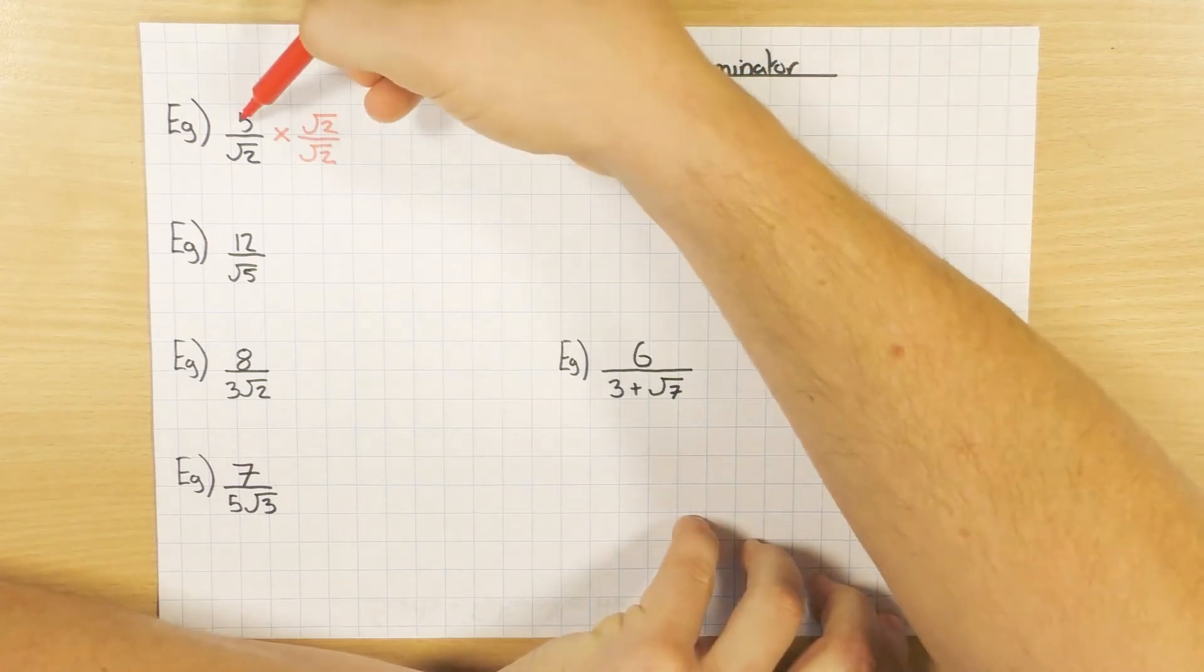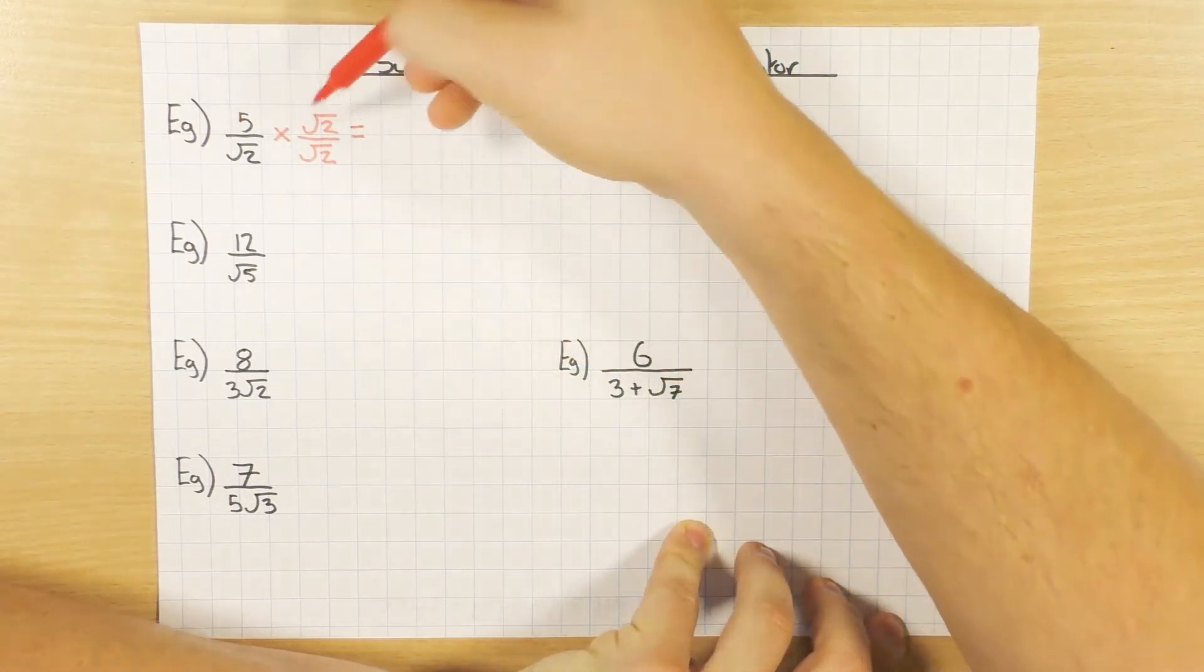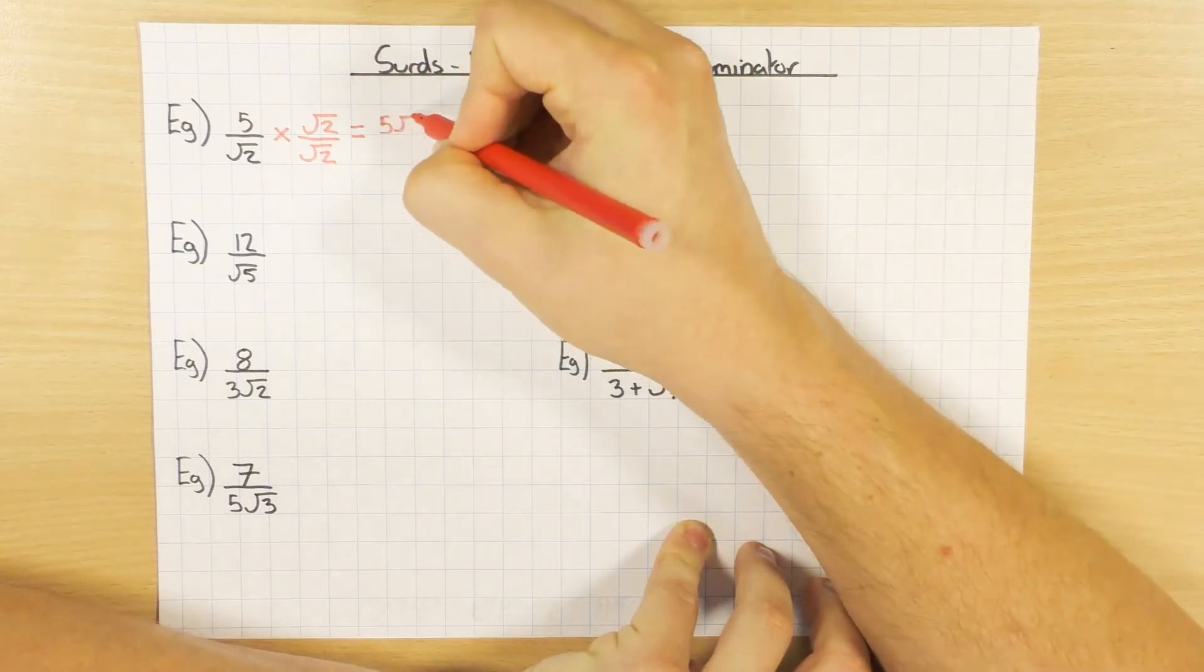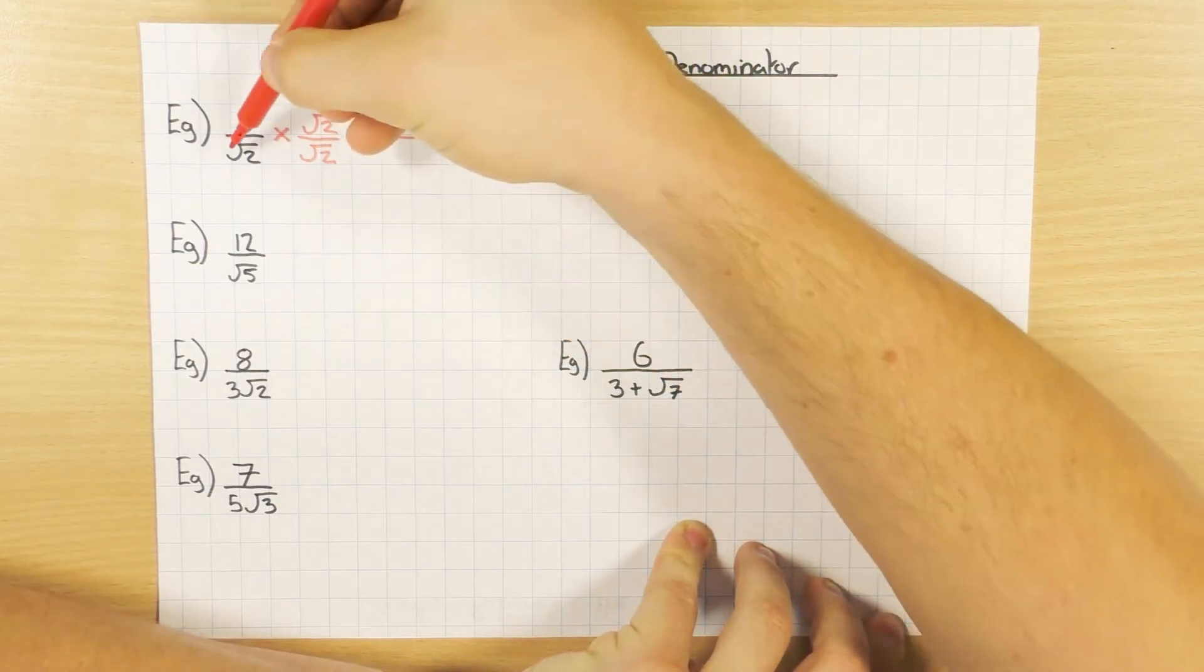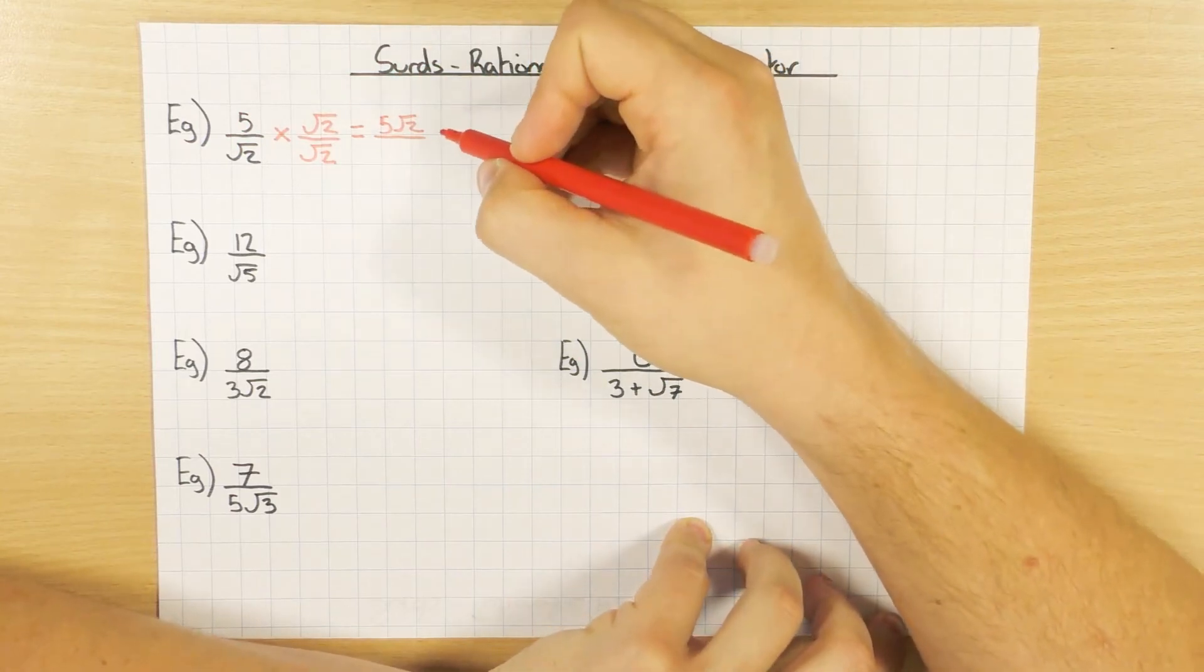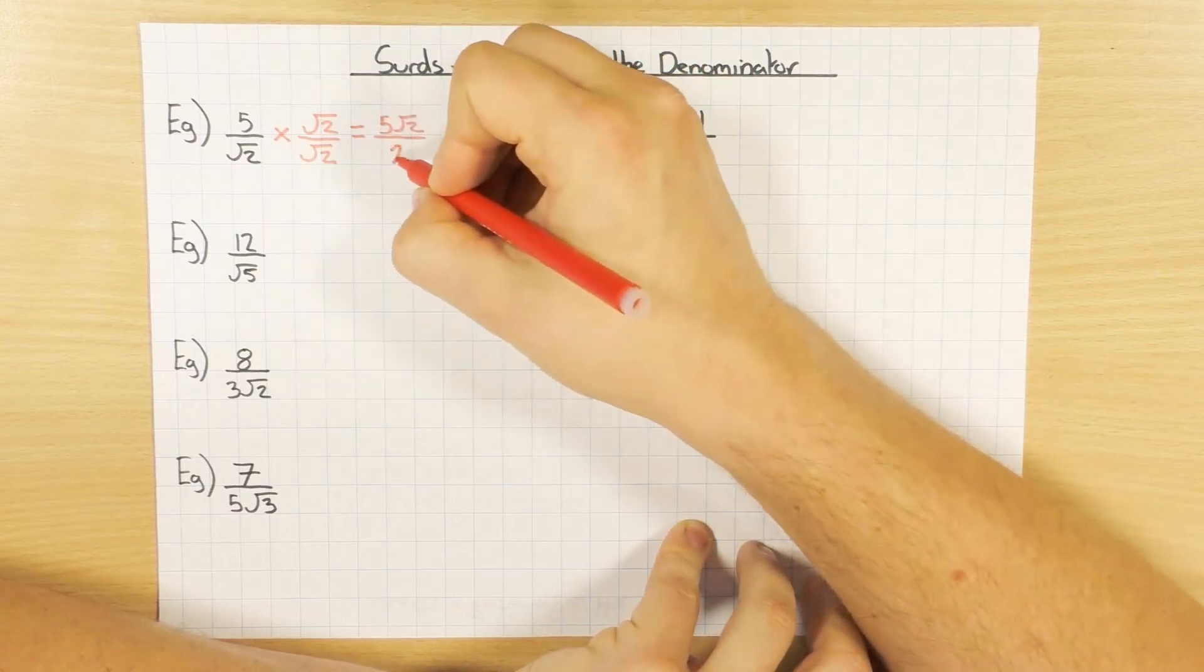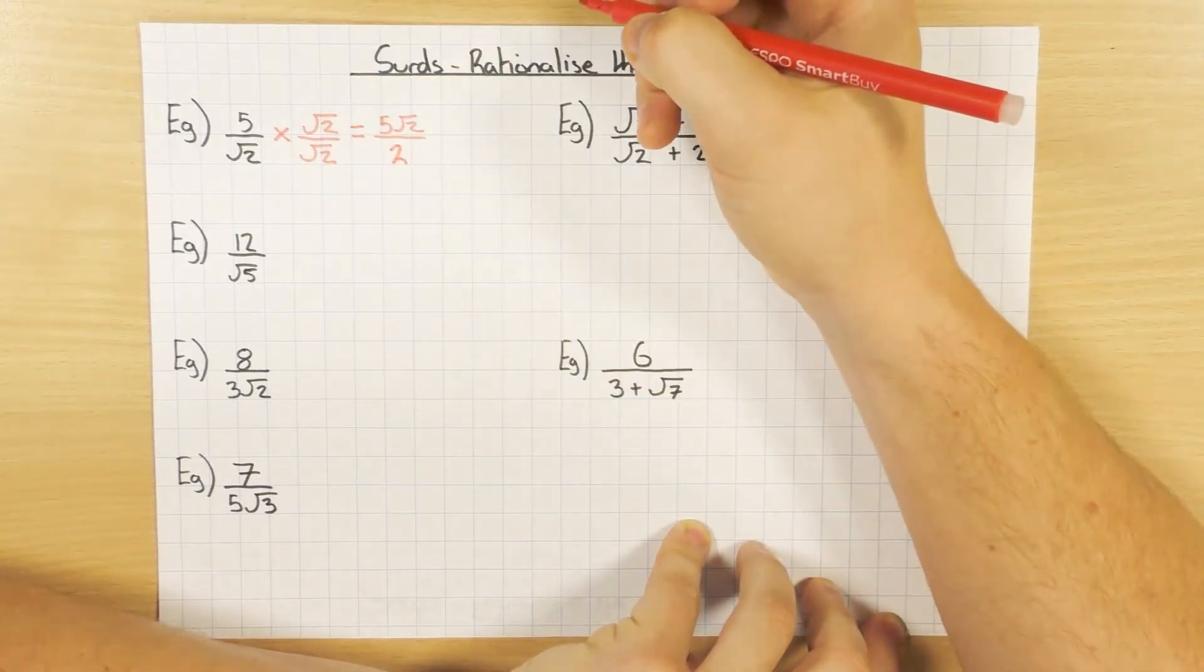So when you multiply fractions, we just multiply the top, which is 5 times root 2, which is just 5 root 2. And we multiply the bottom, root 2 times root 2. Now if you remember from my previous surds video, if you've got a square root and you times it by the same square root, you just get the number. So that's just going to be 2.